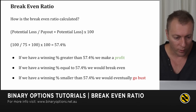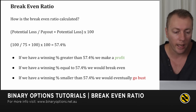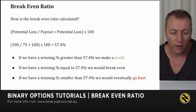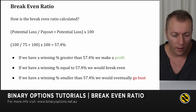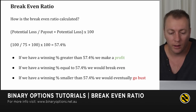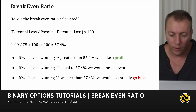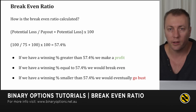Moving on to an actual example: if the potential loss is 100% and the potential payout is 75%, then the break-even ratio is calculated at 57.4%. If our winning percentage is greater than 57.4% we make a profit, if it's equal to 57.4% we break even, and if it's smaller than 57.4% we will eventually go bust.